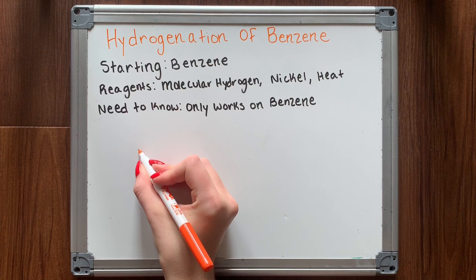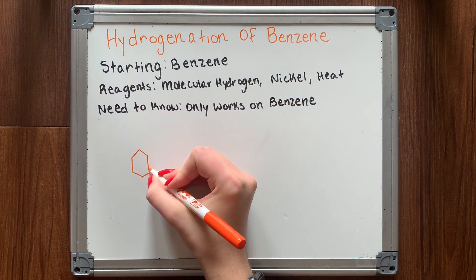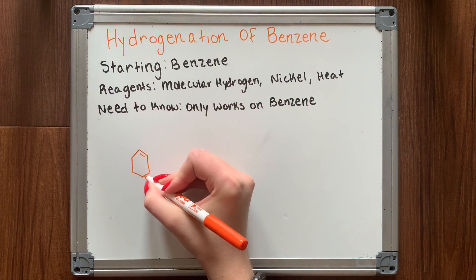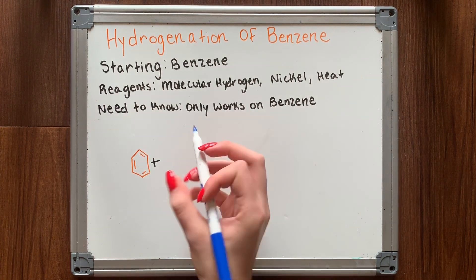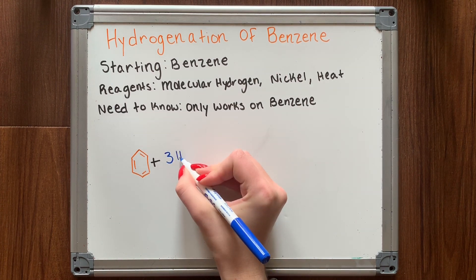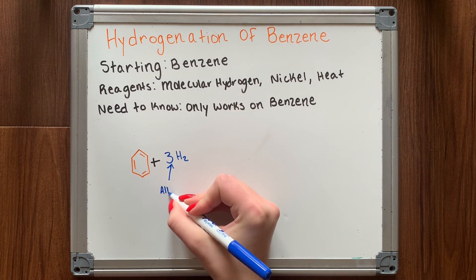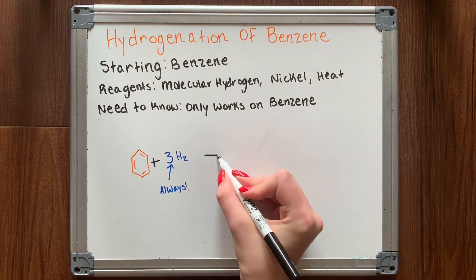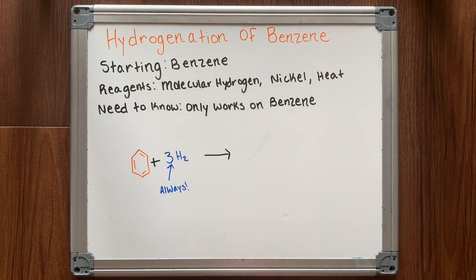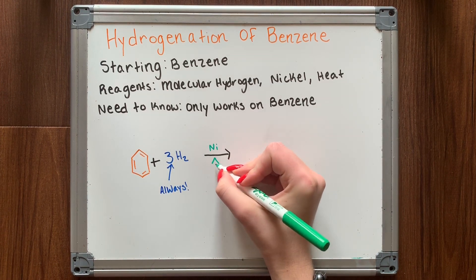Hydrogenation of benzene. This is pretty straightforward — the only starting material is benzene, and your end product will always be cyclohexane. You treat your benzene with molecular hydrogen, nickel, and heat, and this will reduce your benzene all the way down to cyclohexane.